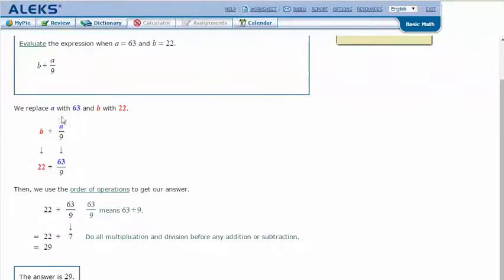We replace A with 63 and B with 22. So instead of B plus A over 9, we have 22 plus 63 divided by 9.